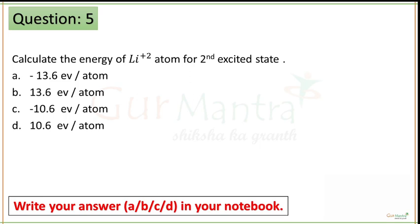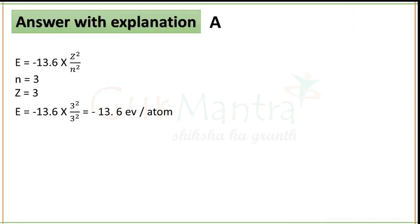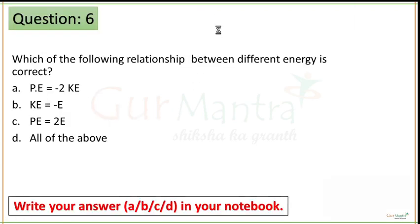Time up guys. You have to calculate the energy of the Li²⁺ atom. As you know, E = −13.6 × Z²/N² eV. Here Z is the atomic number of the element. You have been given the second excited state, which means the value of N is 3, and the value of Z is also 3. When you put the values into this equation, you will get the answer as −13.6 electron volts per atom — that is option number A. Next question is question number 6, your time starts now.